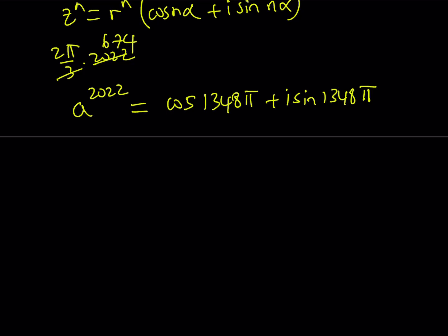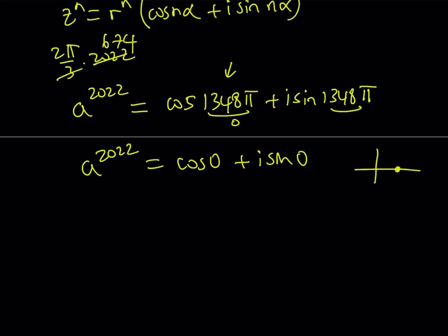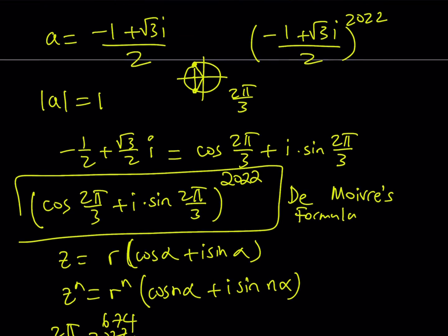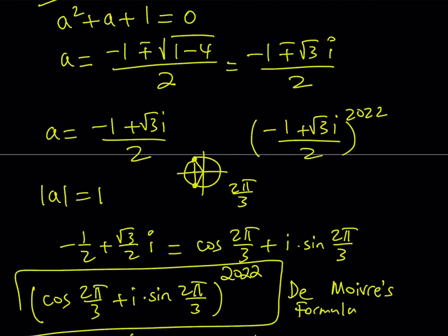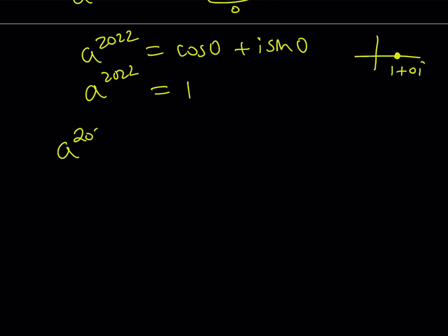Why did I mention that this is a multiple of 2π? Because 2π is equivalent to 0. Therefore, 1,348π is the same as 0 degrees or 0 radians. So we get a very simple expression: cosine of 0 plus i times sine of 0, which is just 1 plus 0i — therefore it's just 1. So a to the power of 2022 equals 1. But what was I looking for? I was looking for a to the power of 2022 plus the reciprocal of that. The reciprocal of 1 is 1, so the answer is 1 plus 1 equals 2. That brings us to the end of the first method.